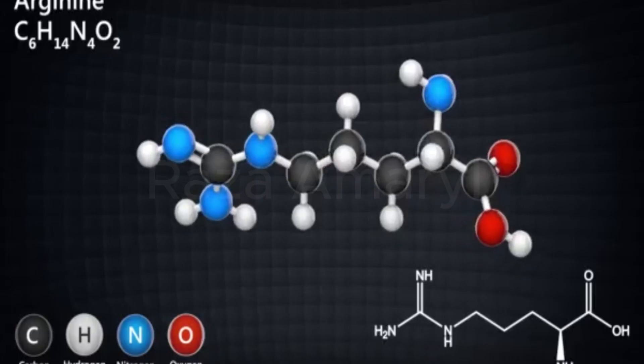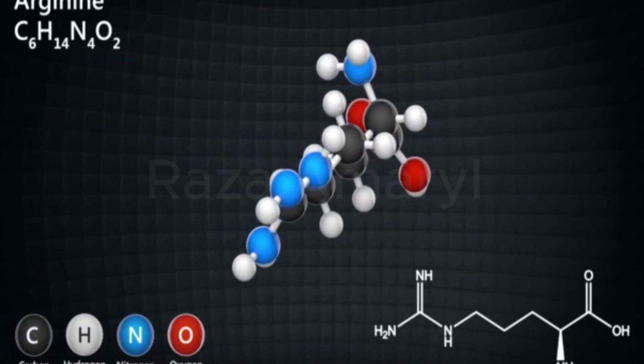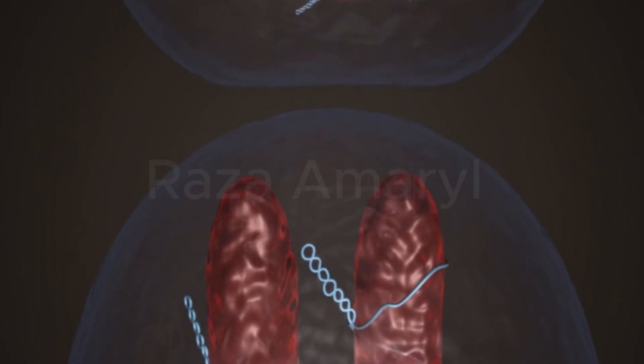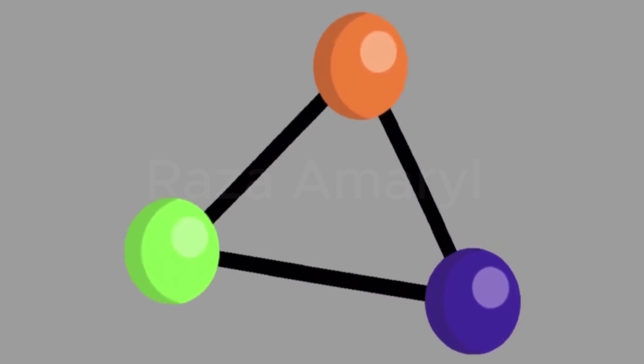This intricate process ensures that the genetic information encoded in the DNA is accurately transcribed and translated to produce functional proteins essential for various cellular processes.